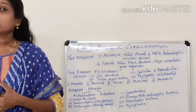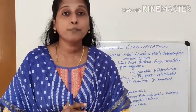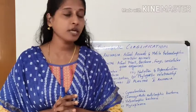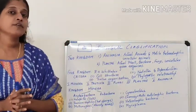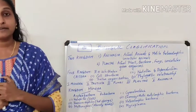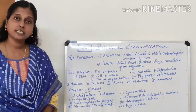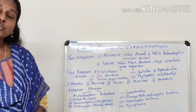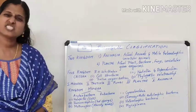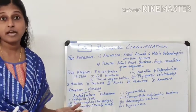Today we are going to learn in detail about the first kingdom — Kingdom Monera. This kingdom is divided into two categories: Archaebacteria and Eubacteria.